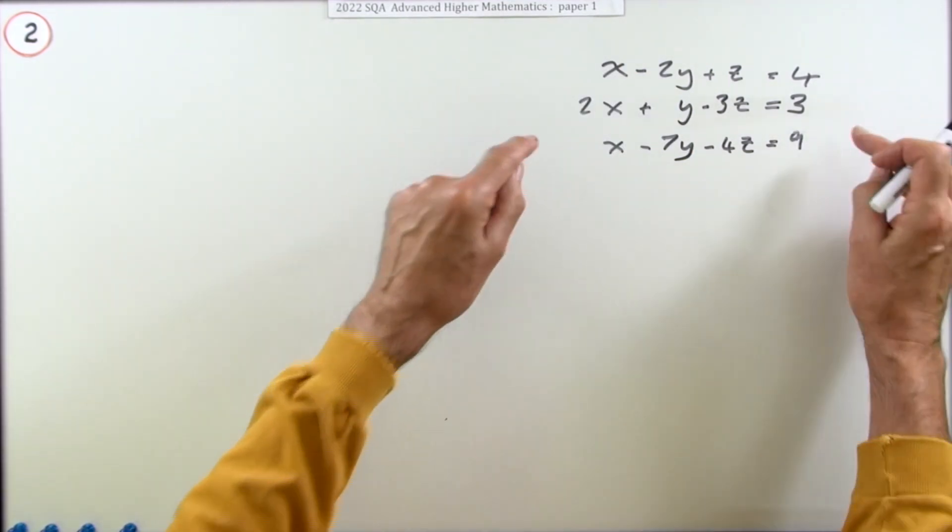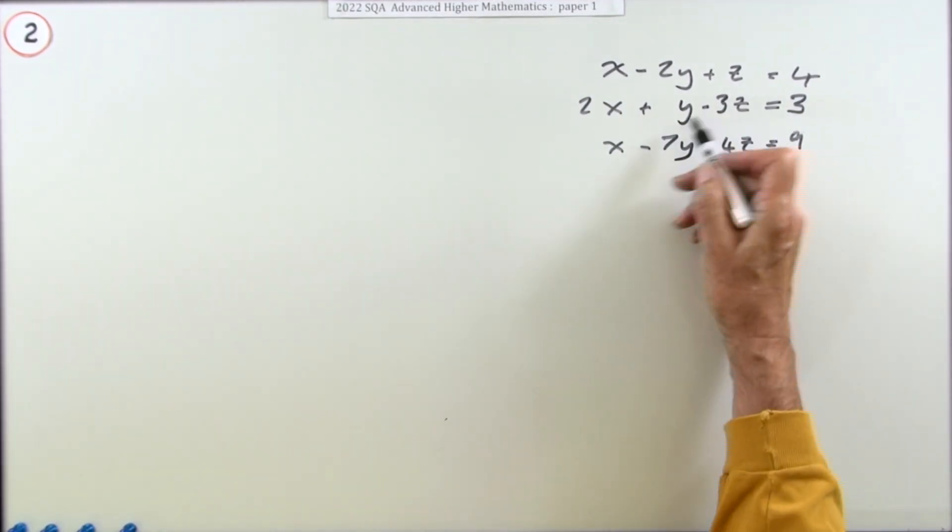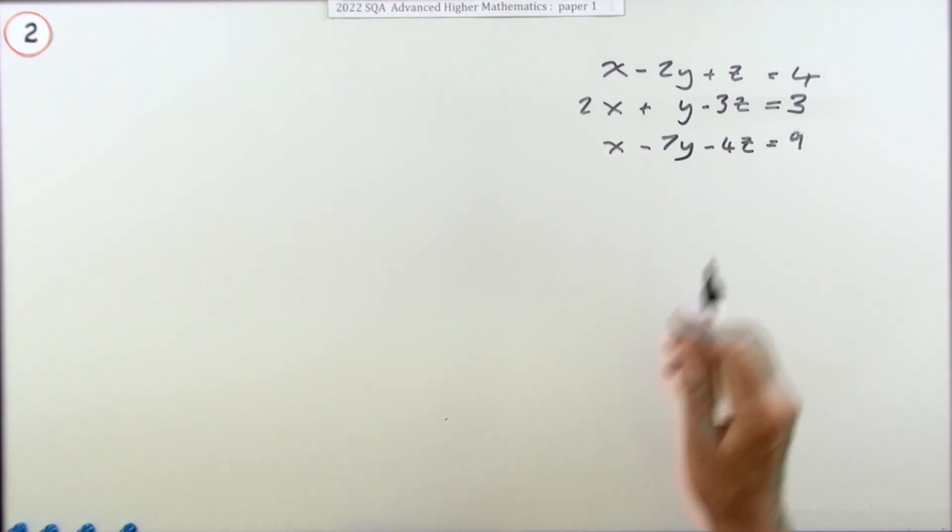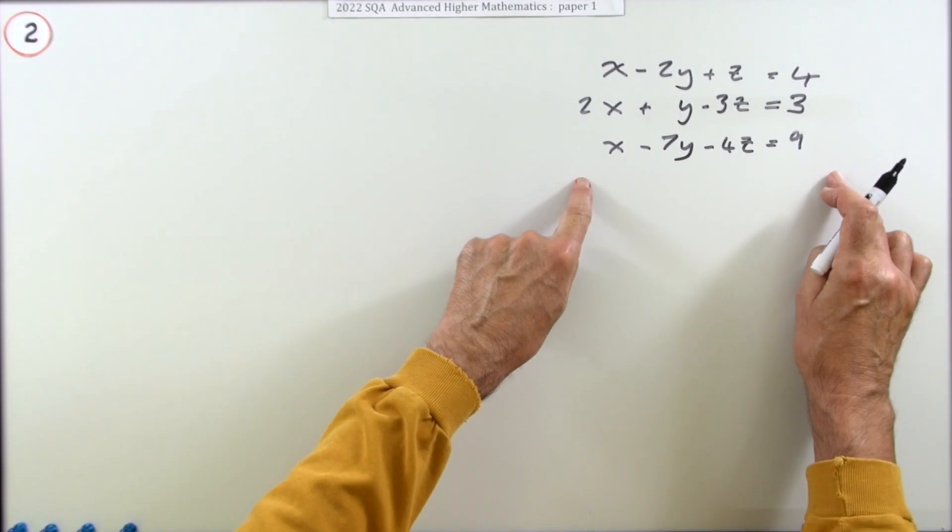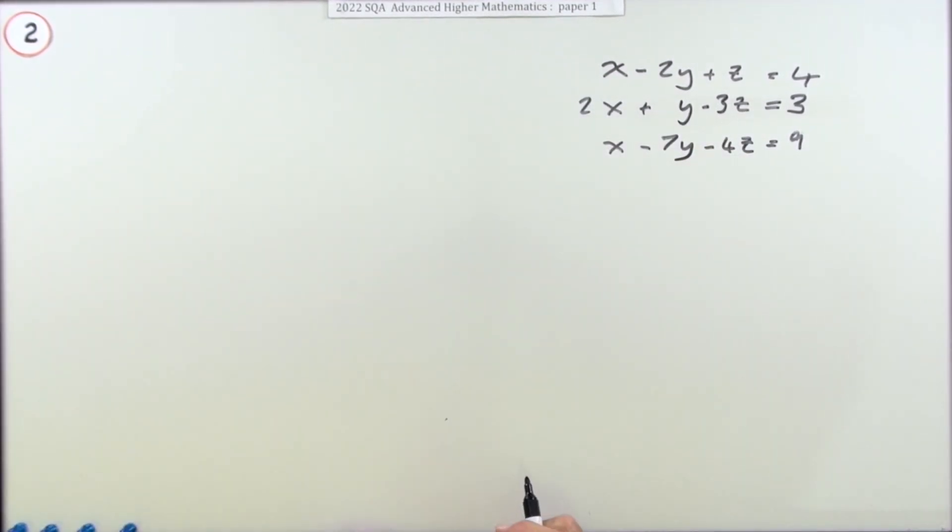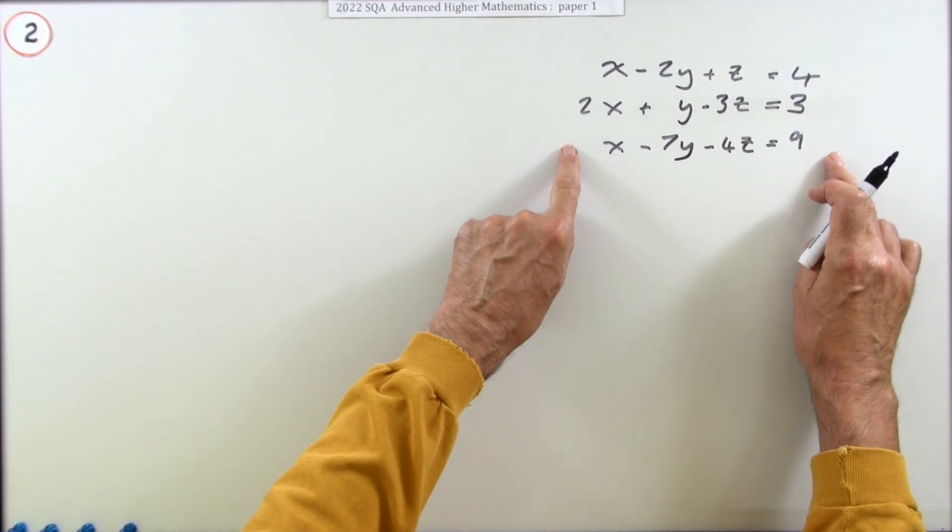So you'll end up with two equations in two variables, and then you multiply and add them to get rid of one of those. Gaussian elimination is just that written in a concise form.